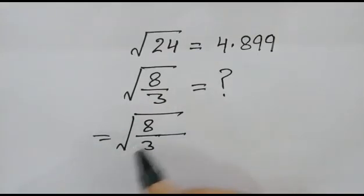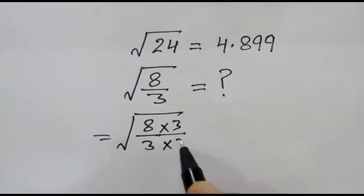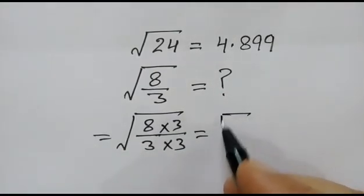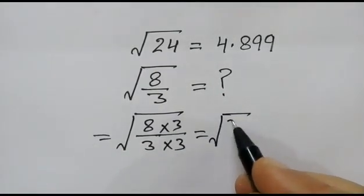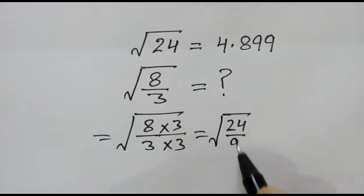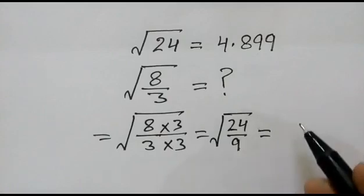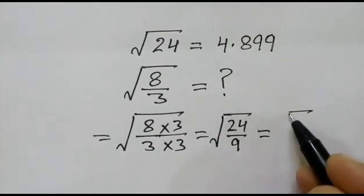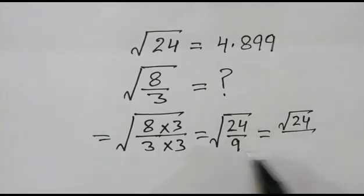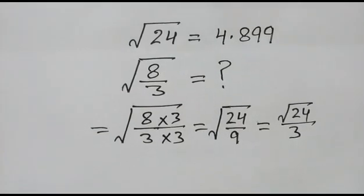We will multiply the numerator and denominator by 3. This will be equal to square root of 24 over 9, which is equal to square root of 24 over square root of 9, and square root of 9 is 3.